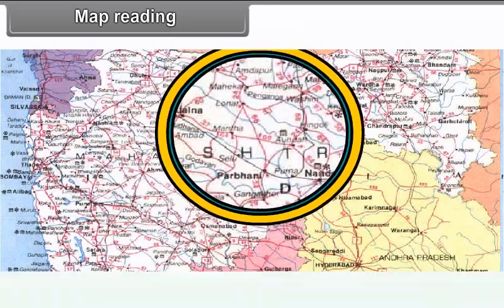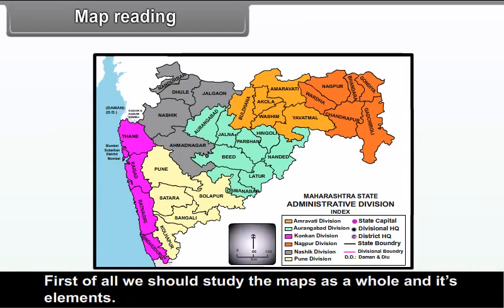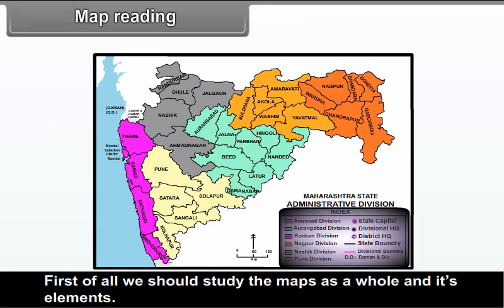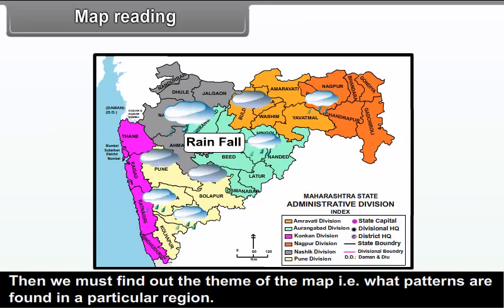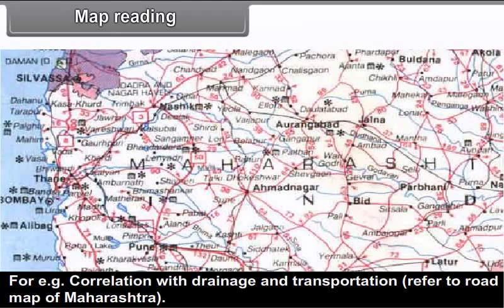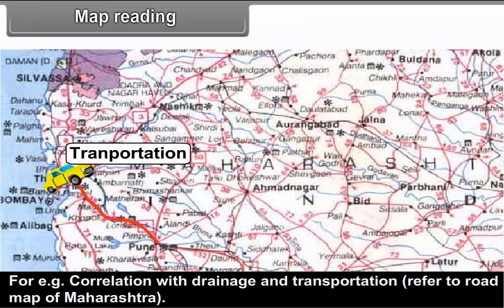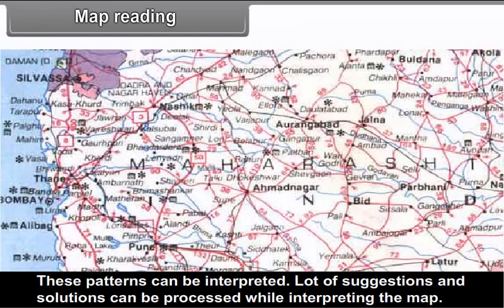Map Reading: A map has a lot of information loaded in it, which we must read carefully. First, we should study the map as a whole and its elements. Then we must find out the theme of the map — that is, what patterns are found in a particular region. For example, correlation with drainage and transportation. Refer to the road map of Maharashtra. These patterns can be interpreted, and many suggestions and solutions can be processed by interpreting the map.